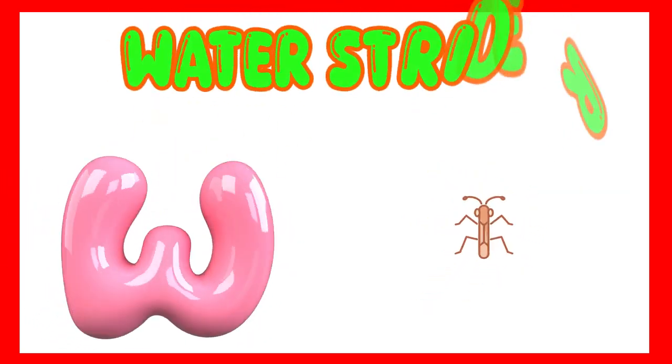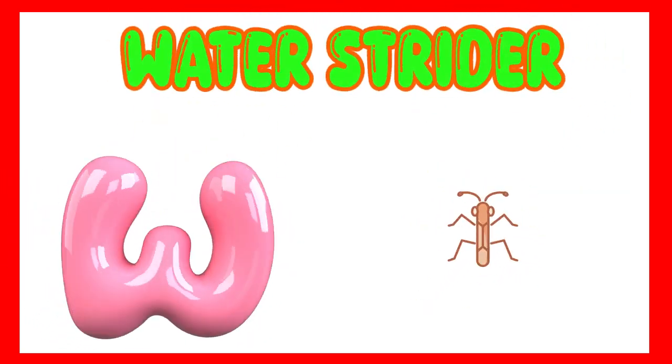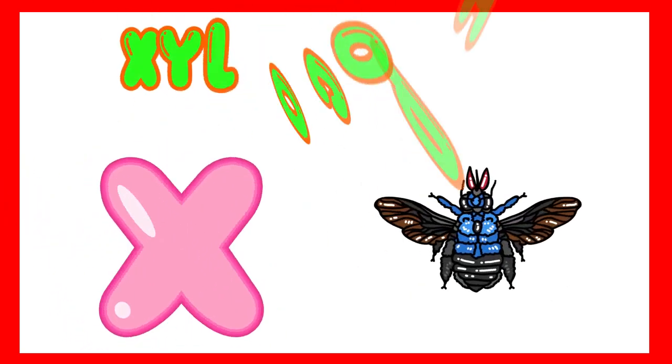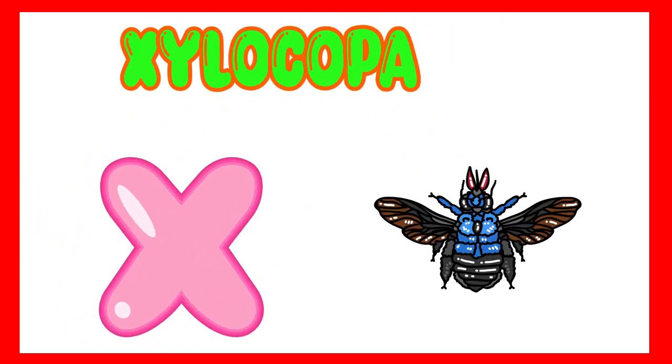W is for water strider. W, water strider. X is for xylocopa. Z, xylocopa.